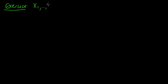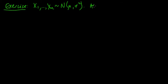Let x₁ to xₙ be normally distributed with mean mu and variance sigma squared. We're going to consider estimating sigma squared, and we'll assume mu is known.